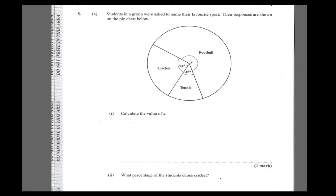To find the value of x, the first thing we notice is that if we add up 94 and 45, we get the total representing cricket and tennis. So adding 94 plus 45 — putting your degrees — that is equal to 139 degrees.